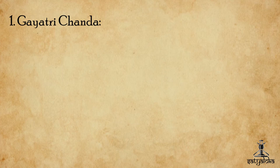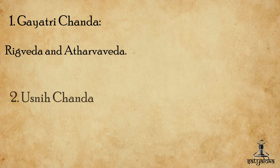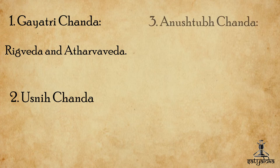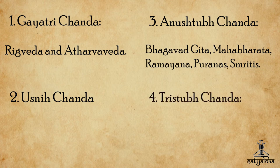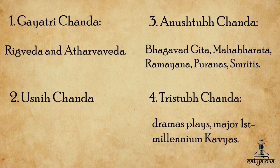The Gayatri Chhanda is found in fundamental Vedic texts like Rugaved and Atharvaved. Ushne is the second Chhanda found in Vedic texts but is not used as frequently as Gayatri. The Anushtap Chhanda is most frequently used in post-Vedic Sanskrit metrical literature, embedded in the Bhagavad Gita, the Mahabharata, the Ramayana, the Puranas, Smritis and scientific treatises. The Trishtap Chhanda is second in frequency in post-Vedic Sanskrit metrical literature, dramas, plays, parts of the Mahabharata and major first-millennium kavyas.